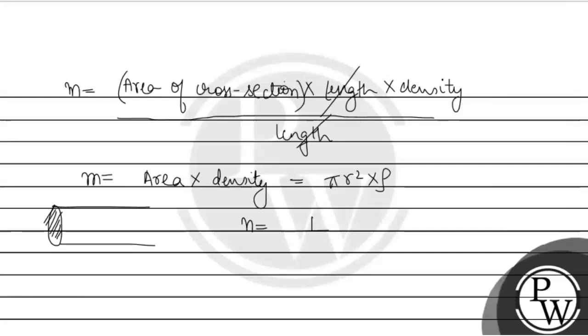Therefore, n that is fundamental frequency can be written as 1 upon 2L under the root of T divided by pi r square into rho. And let n prime with the frequency. This is our initial frequency. And n prime we have known frequency.